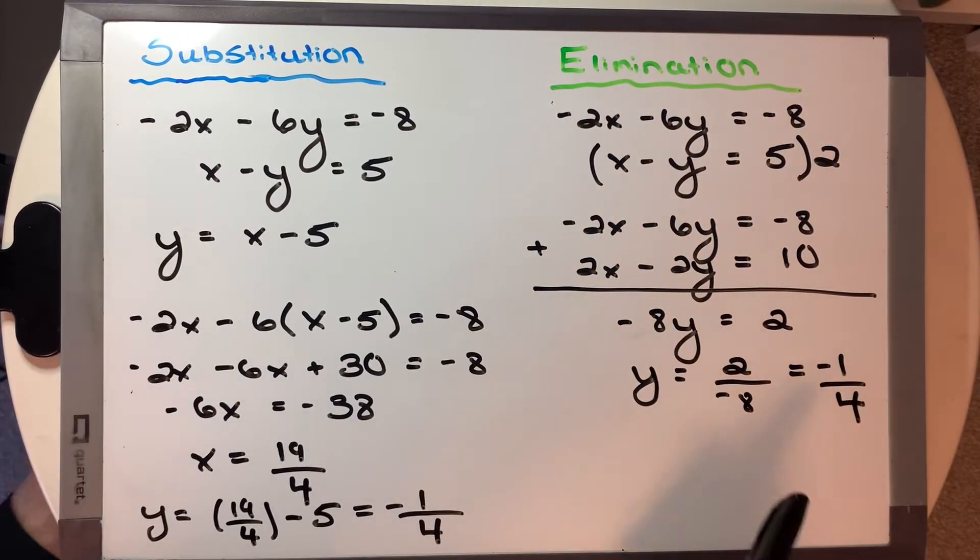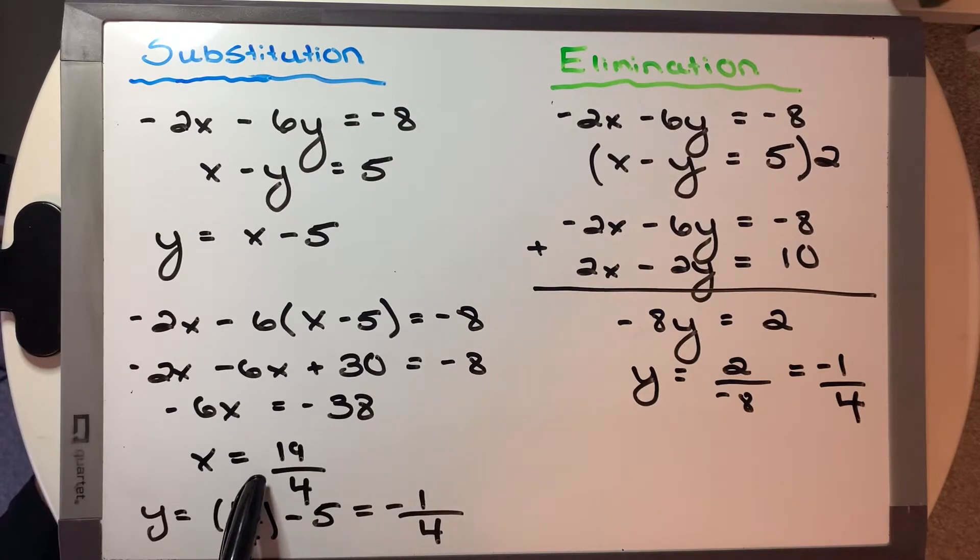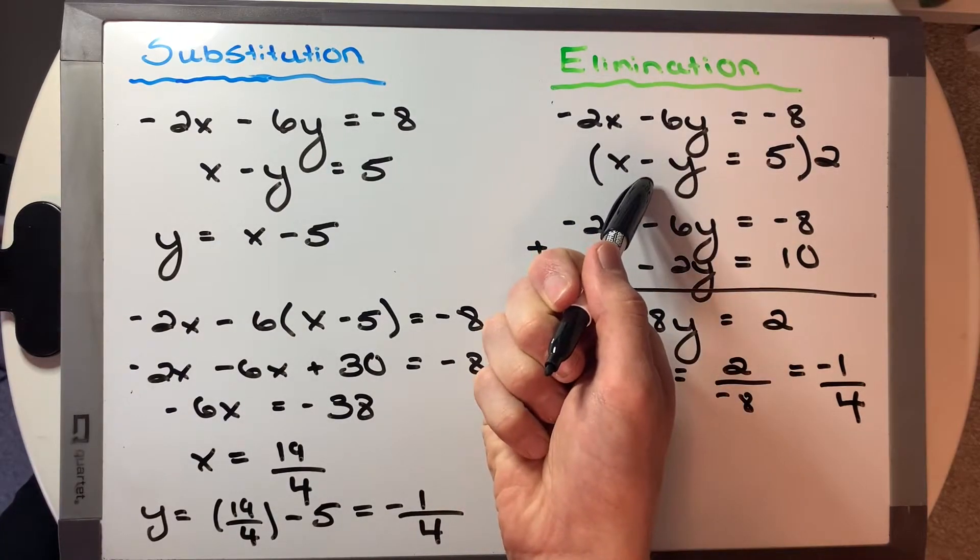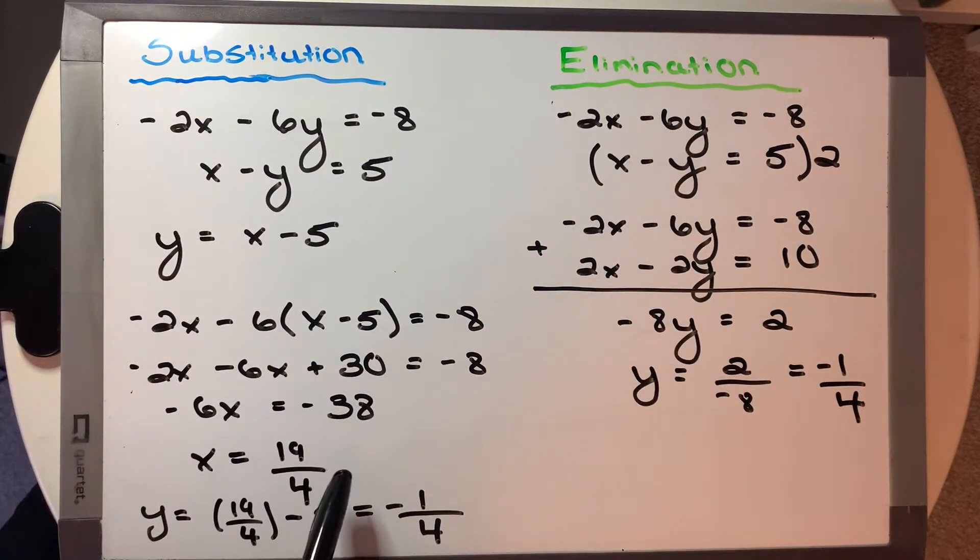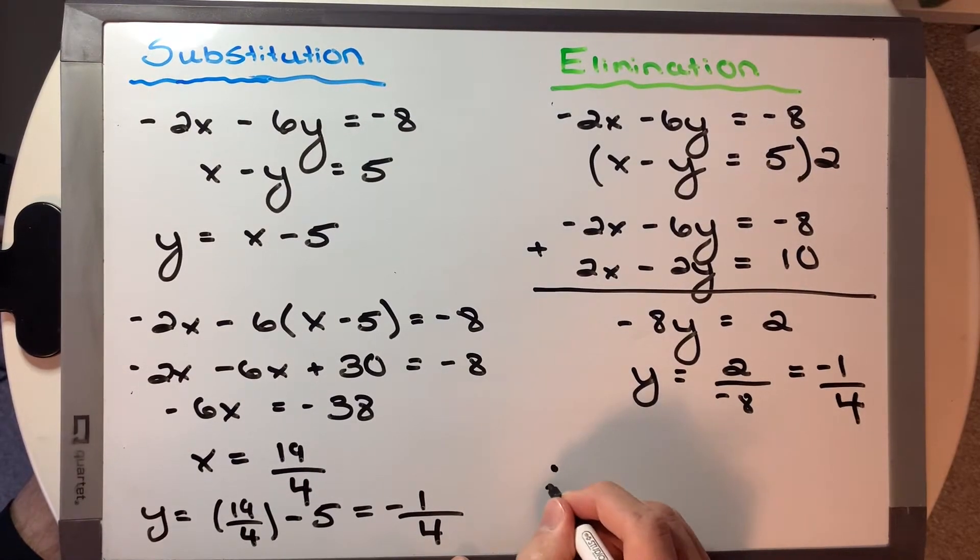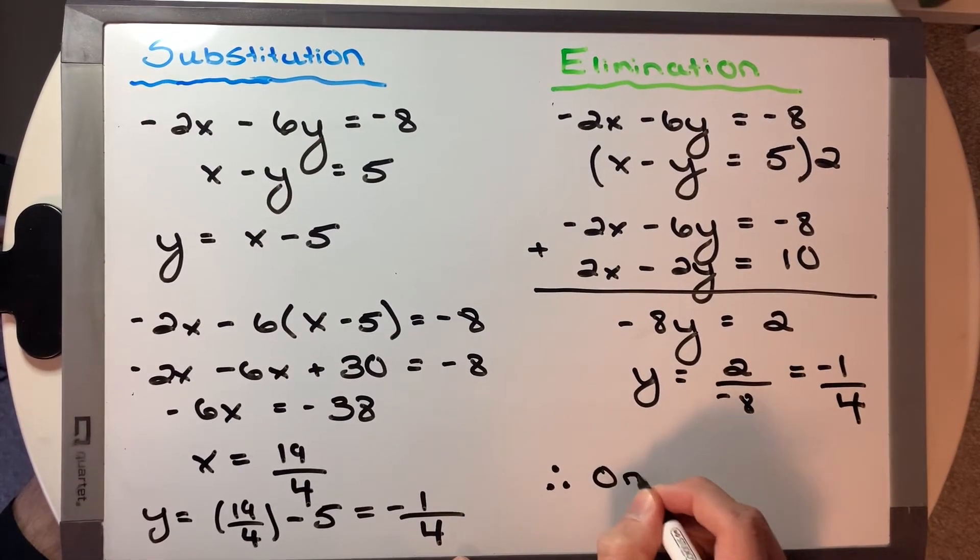And as you can see, we could do the same thing as we did here and take the value we solved for and sub it back into either one of these equations, and we would get this 19 over 4. So therefore, we say we have one solution on this problem.